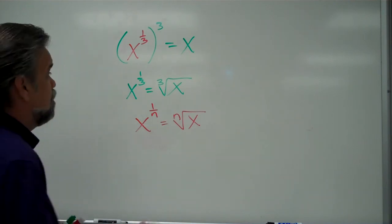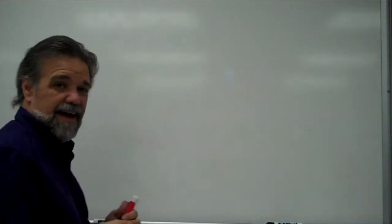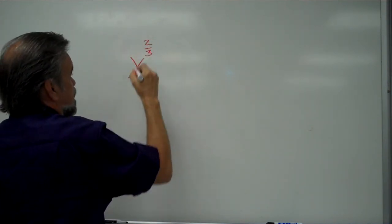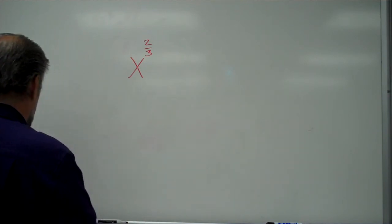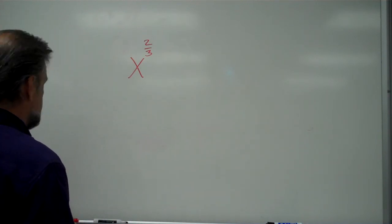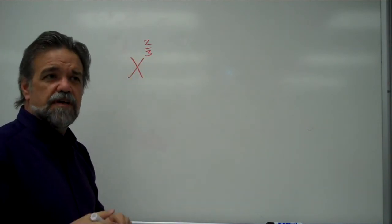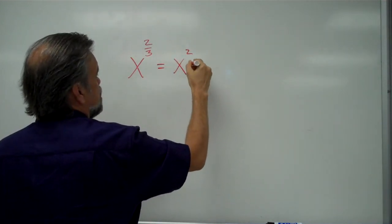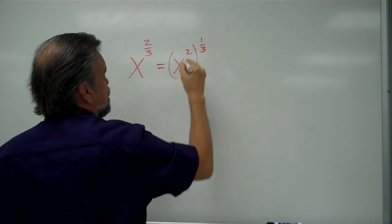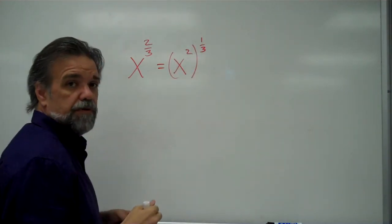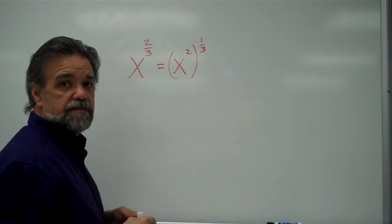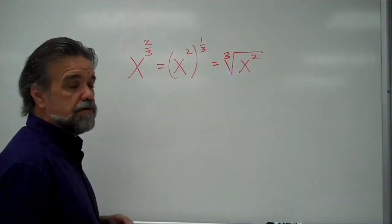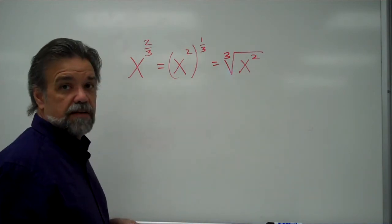But, as we all know, not all fractions have 1 in the numerator. You might have a fraction like x to the 2 thirds. What does that mean? Well, what it means is 2 thirds, that's the same thing as saying 2 times 1 third, right? Okay? So, that's x squared to the 1 third, because it's going to be 2 times 1 third. Well, to the 1 third power, that simply means the cube root.